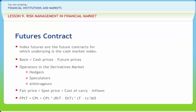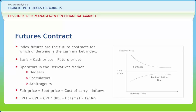Fair price equals spot price plus cost of carry minus inflows. FPT is the fair price of the asset at time t for time T. CPT is the cash price of the asset. RTT is the interest rate at time t for the period up to T. DTT is inflows in terms of dividend or interest between t and T. Cost of carry equals financing cost, storage cost, and insurance cost.